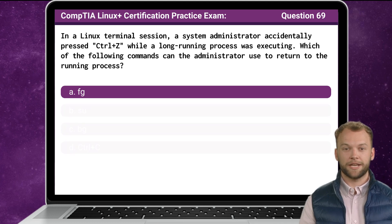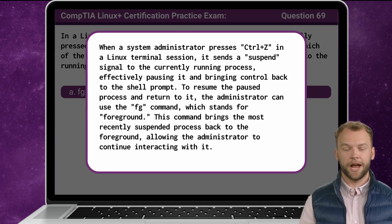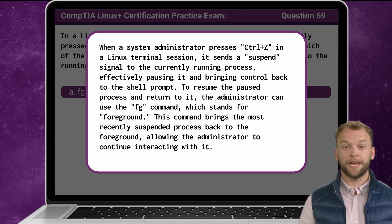The answer is A. fg. When a system administrator presses CTRL-Z in a Linux terminal session, it sends a suspend signal to the currently running process, effectively pausing it and bringing control back to the shell prompt. To resume the paused process and return to it, the administrator can use the fg command, which stands for foreground. This command brings the most recently suspended process back to the foreground, allowing the administrator to continue interacting with it.